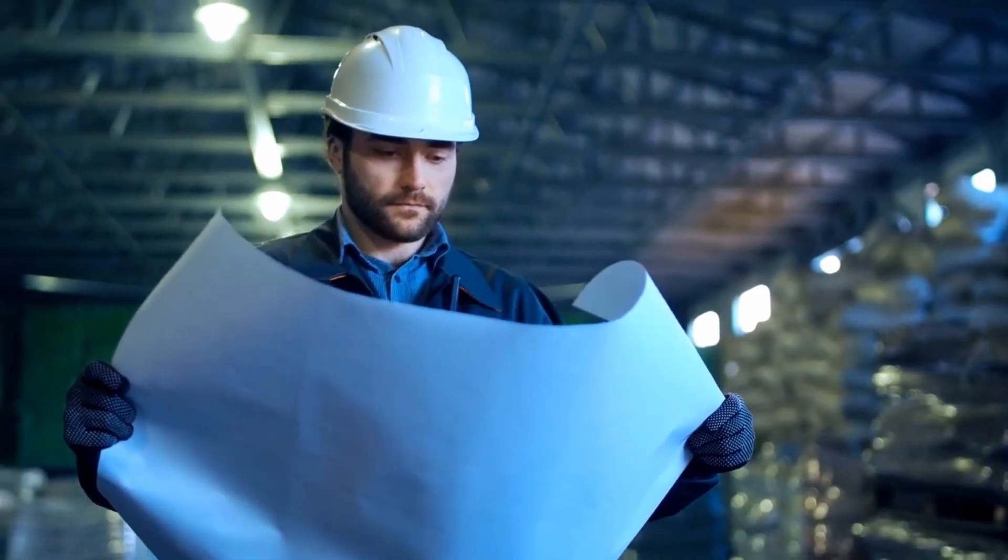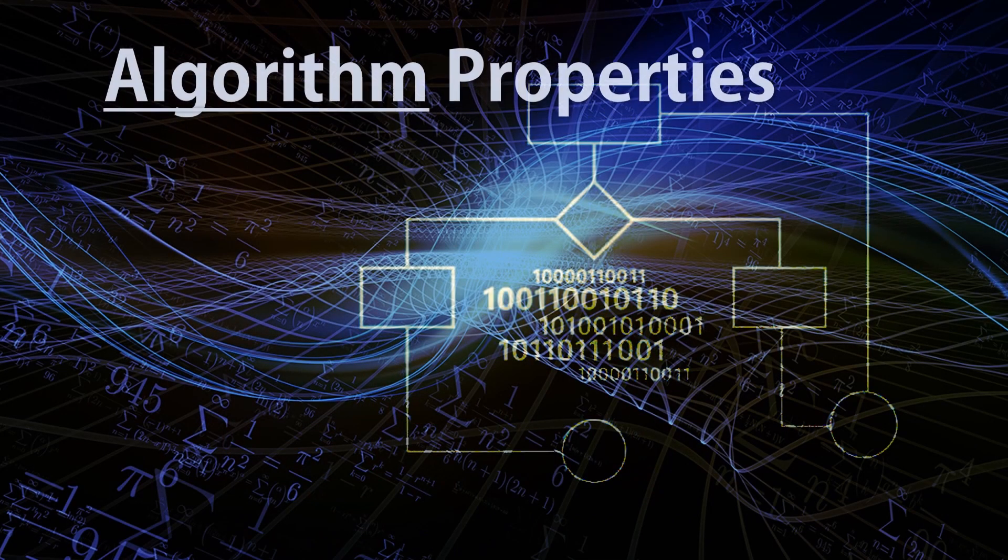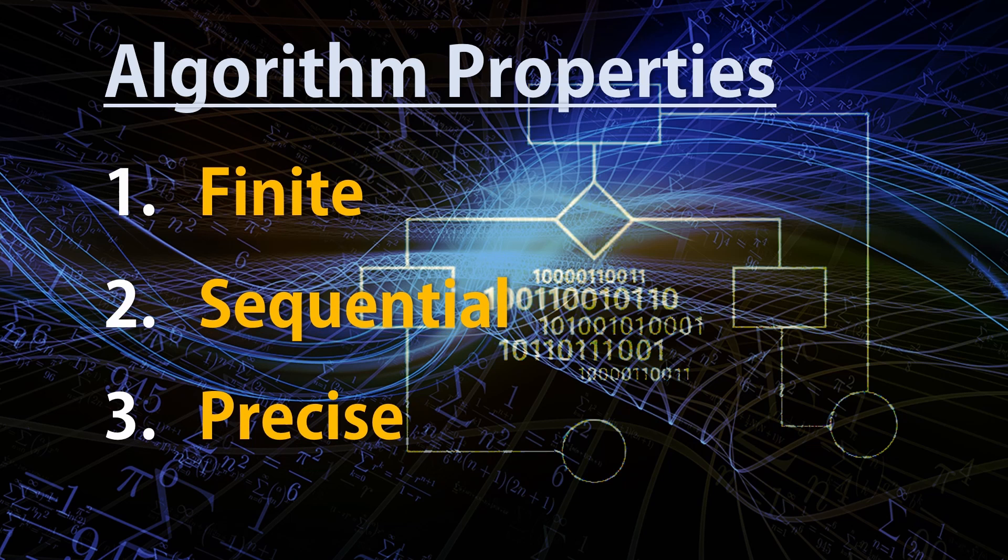In other words, it is just a plan or blueprint for solving a problem. There are three main properties of an algorithm: one, an algorithm needs to be finite, meaning having an end; two, an algorithm needs to be sequential, which means step by step; and three, an algorithm needs to be precise, which...